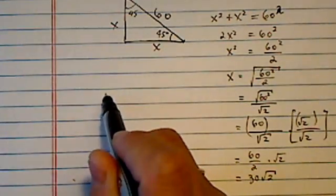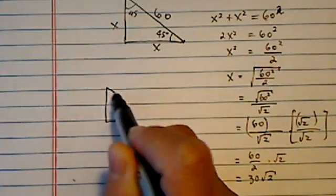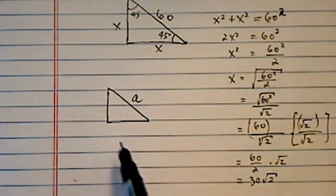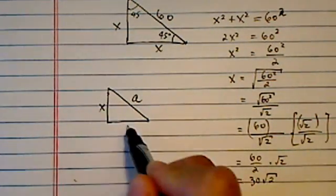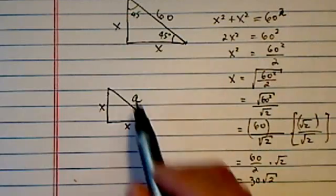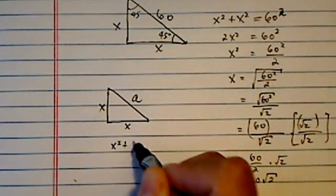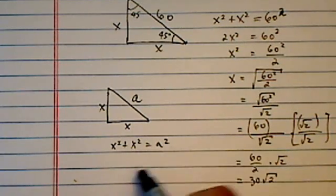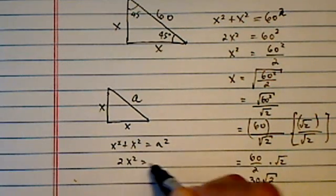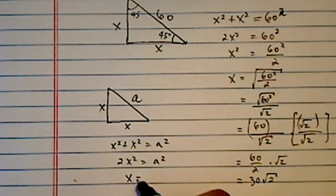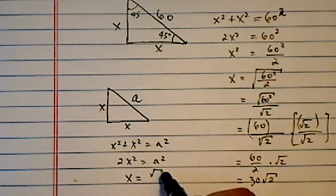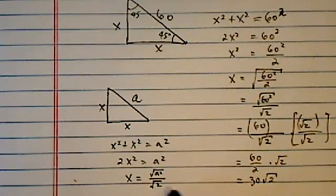Now in the general case here, if they don't give you any numbers, we can still carry out exactly the same thing. If we call the hypotenuse a, we still have x squared plus x squared equal to a squared. So 2x squared is equal to a squared, then x is equal to radical a squared over radical two.